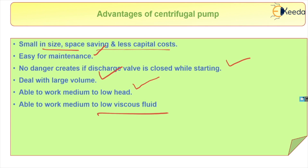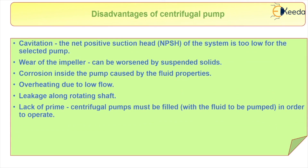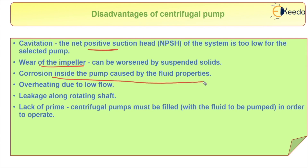Now let's see about the disadvantages of the centrifugal pump. The main problem is cavitation. Next, there is wear of the impeller. Next, corrosion inside the pump caused by fluid properties, overheating due to fluid flow, leakage along the rotating shaft, and lack of priming — that is, centrifugal pumps must be primed in order to operate.